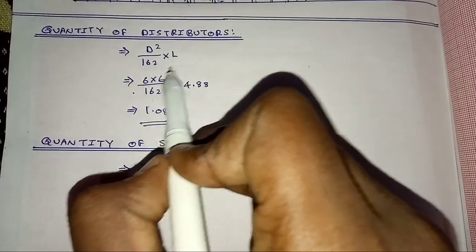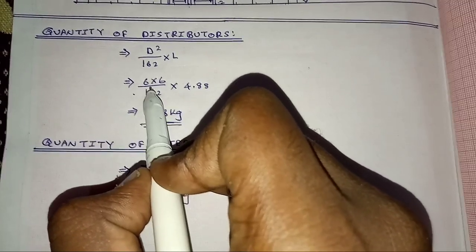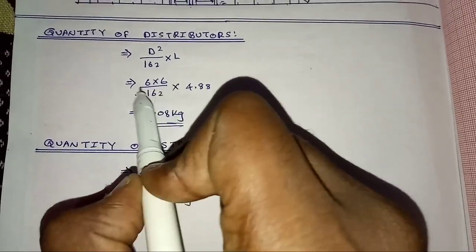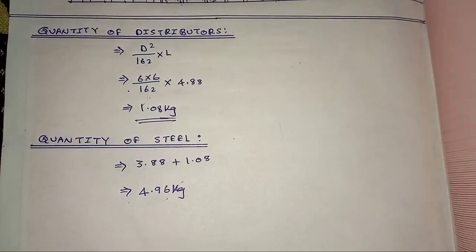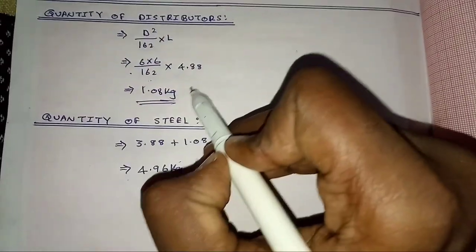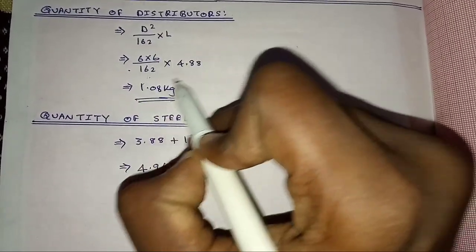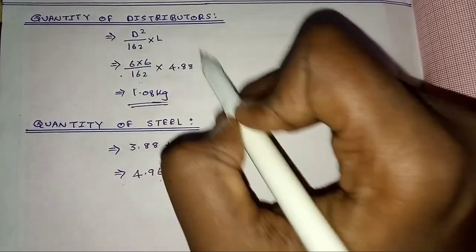That length of distributors is 16 feet. Quantity of distributors, d squared by 162 into length. Distributors diameter 6mm, 6 into 6 divided by 162 into length. 1.08 kg of distributors.